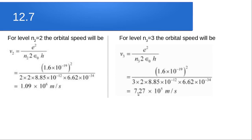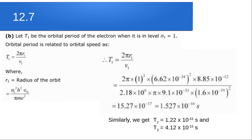As you go to higher orbits further from the nucleus, the speed of the electron decreases. Now to calculate the time to complete a full revolution in each orbit, T = 2πr/v, where r is the radius of the orbit and v is the velocity. The radius can be calculated by r = n²h²ε₀/(πme²), where m is the mass of the electron.